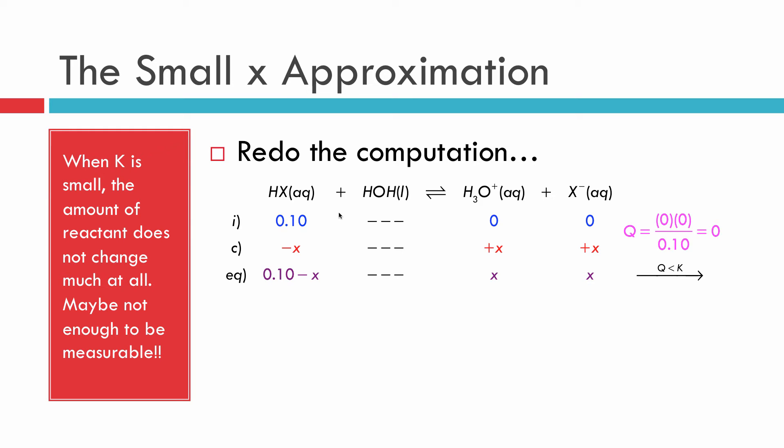So here we are back with the same exact ICE table. Nothing has changed. The next step was to write our equilibrium expression and substitute our pieces in. But the difference is going to be when we substitute in from the equilibrium row, we're going to make notice that because our equilibrium constant is very small, it's 10 to the minus 7th, that we can ignore x. And when we ignore x, this side of the equation simplifies to x squared over 0.10. By the way, you should show this work so that you can tell whoever's reading your work that you have made an approximation. I've approximated the left-hand side with the stuff on the right.